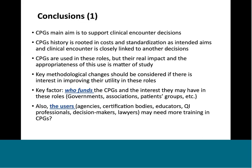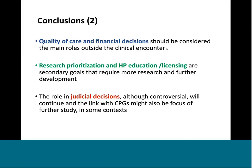So finally: there are two major roles in addition to clinical encounter decisions — quality of care and financial decisions. Those are the main roles outside the clinical encounter. Research prioritization and health professional education and licensing are secondary roles that could be very useful and should be considered, requiring more research and interest to develop. Judicial decisions, although controversial, will continue to exist and the link of guidelines in that context may also merit study. That is what I have for you today and I am happy to hear any questions.